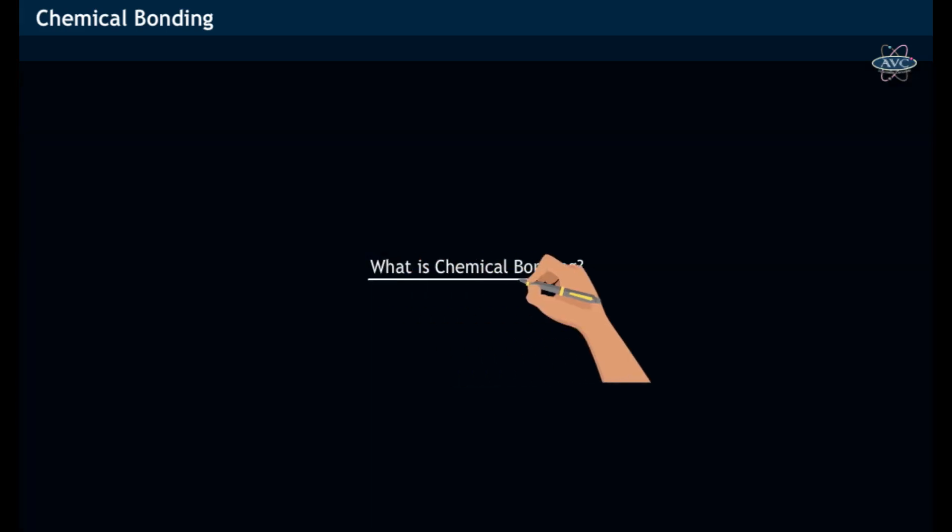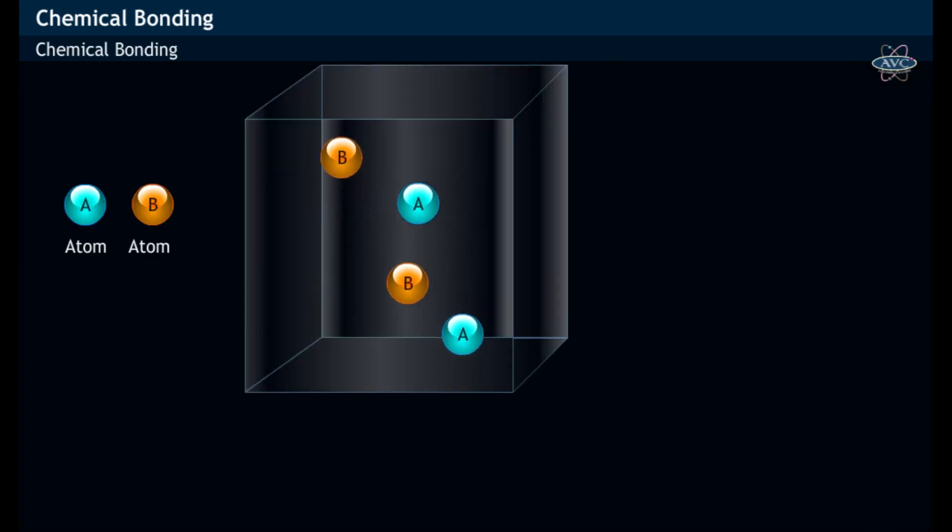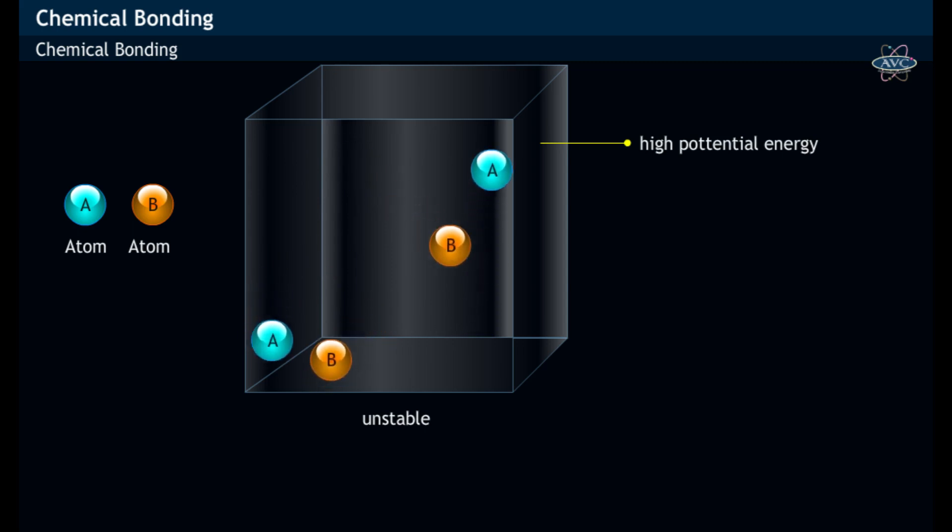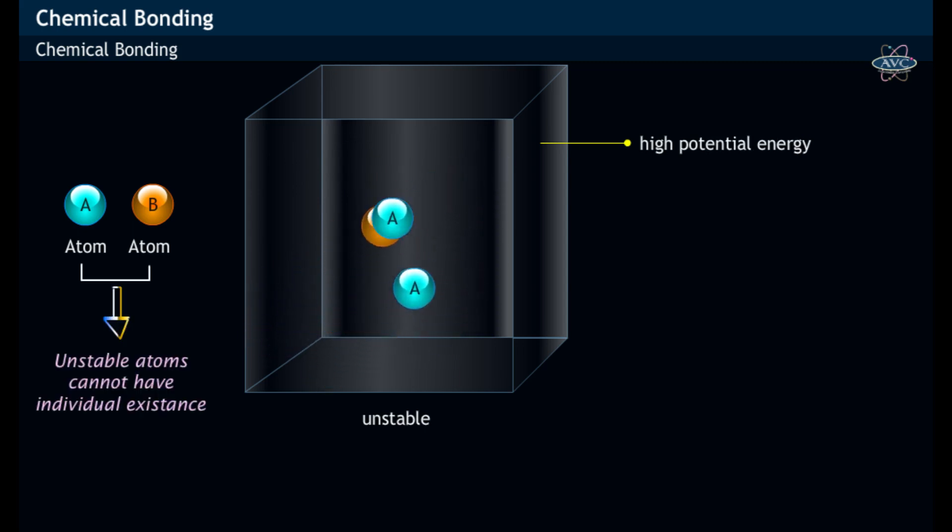What is chemical bonding? Atoms in their original state have got high potential energy that is unstable in nature and rarely capable of individual existence.